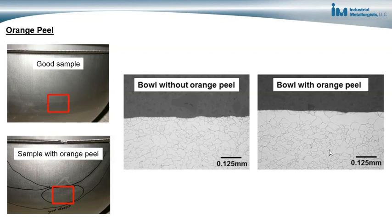The grain structure of the sheet metal would have been affected by the steel-making process, so we had to talk to the steel manufacturer to understand what was causing the large grains. It turned out there were problems with their cooling process used after annealing the steel — one surface of the steel was not being cooled fast enough after annealing, and as a result of the poor cooling, grains at the surface were able to grow larger than they should have.